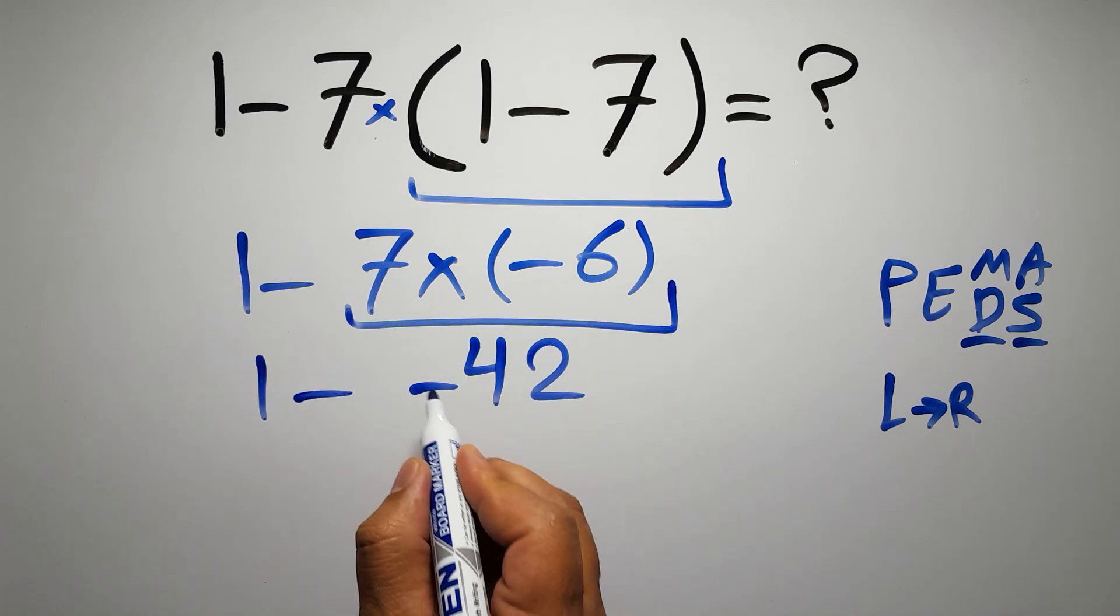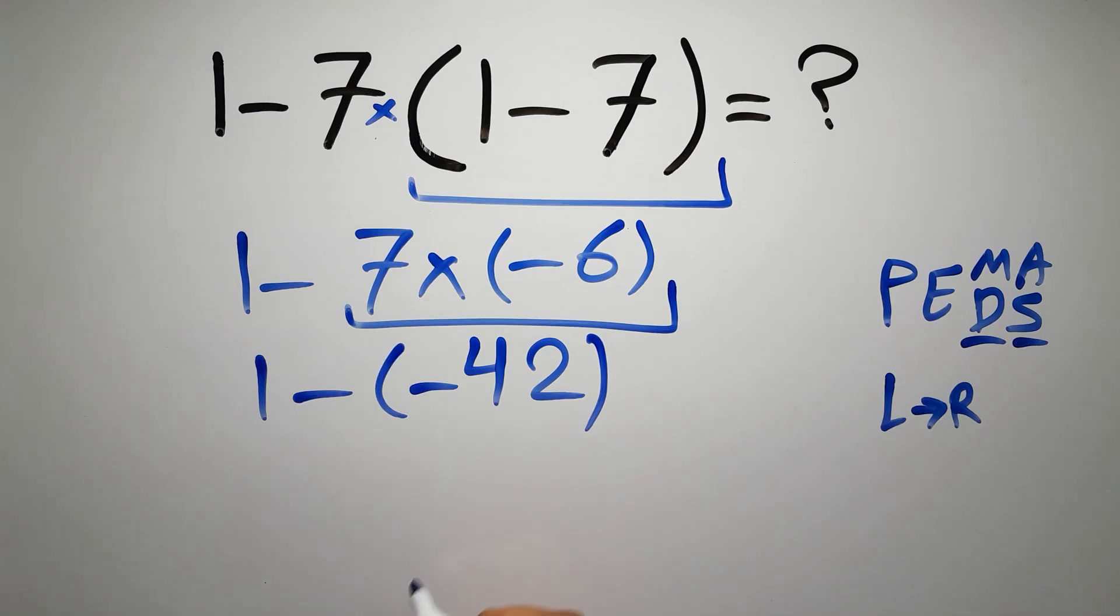So we have 1 minus negative 42. Negative times negative gives us positive. So we have 1 plus 42. And this is equal to 43.